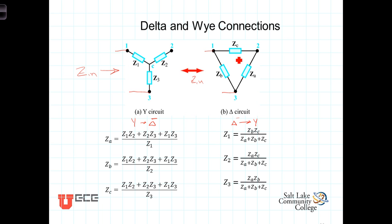Z1 is connected to node 1, Z2 is connected to node 2, Z3 is connected to node 3. Z sub A is the impedance opposite the number 1 terminal, Z sub B is opposite the number 2 terminal, and Z sub C is opposite the third terminal.